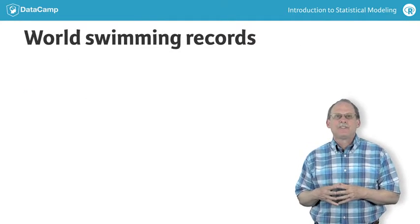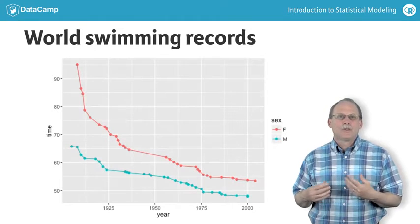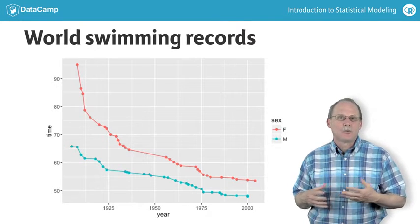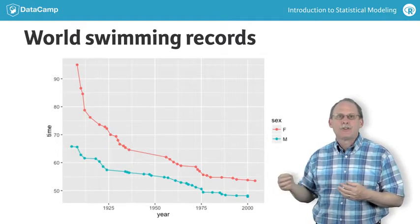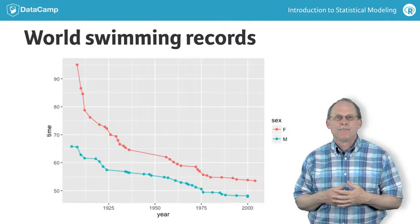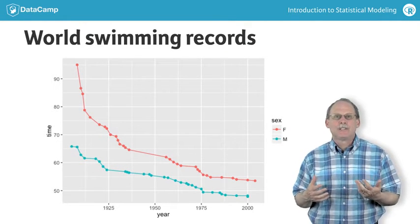As an example, consider a simple story: world records in the 100-meter freestyle swim race. The graph shows these records over the course of the 20th century. Two features are evident from the data points.